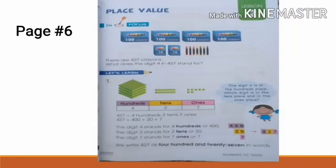This is your textbook page number six. We have 427 crayons. Digit four stands for hundreds, so digit two stands for two tens or 20. Digit seven stands for seven ones.